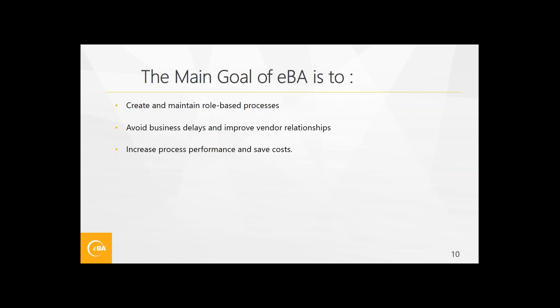We can avoid business delays and improve vendor relationships with this invoice automation, and increase process performance and save costs because most steps will be automatic. You just need to route unmatched invoices to the related departments — the matched ones will be pushed to SAP directly, so there is no need to touch them. I hope this video has provided you an overview of EBA and the invoice automation process, and helps you see what EBA can do for your organization.